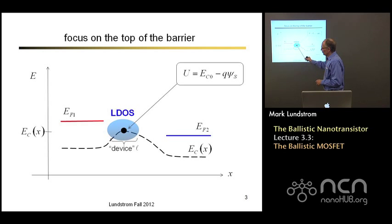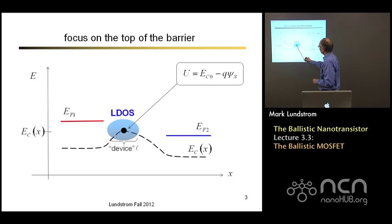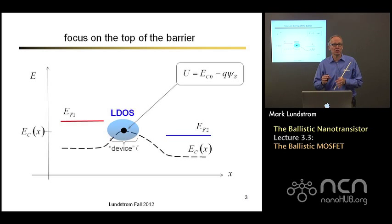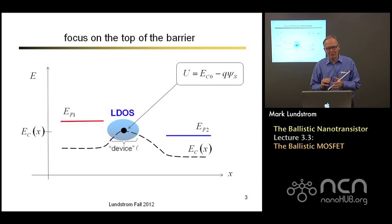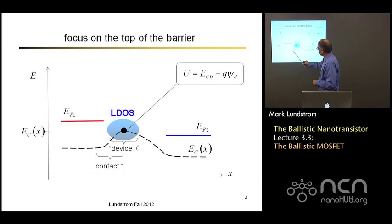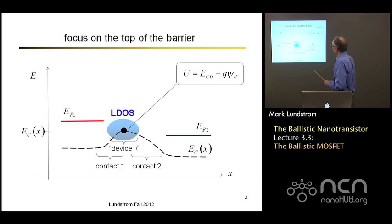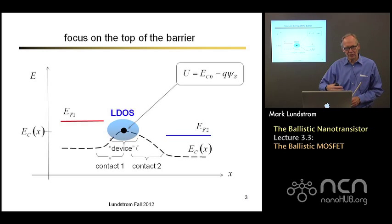This little part near the top of the barrier is the heart of the device — this is what we think of as our nano device. It's characterized by some local density of states, and we assume it has the same band structure as a large chunk of silicon, which is a good assumption as long as the channel doesn't get too small. The device has a length L; the region to the left is the contact for the source, and the region to the right of the barrier top is the contact for the drain.